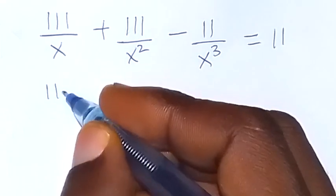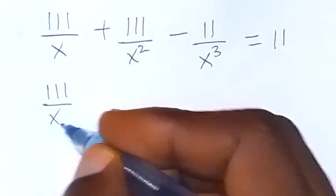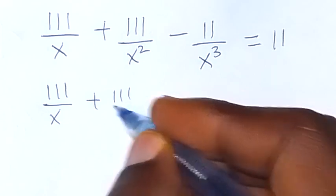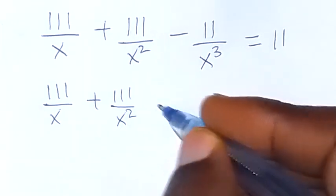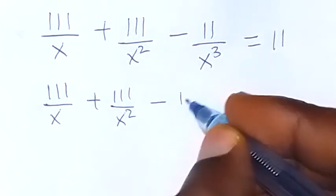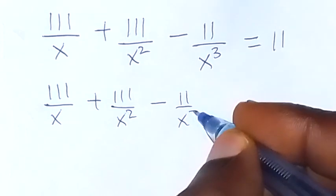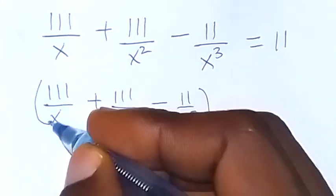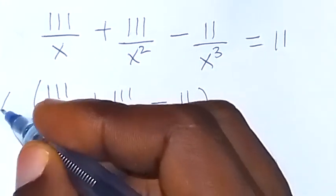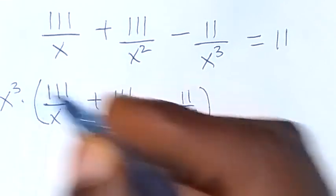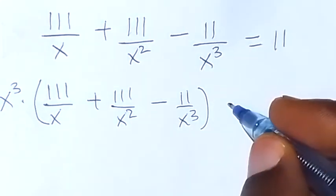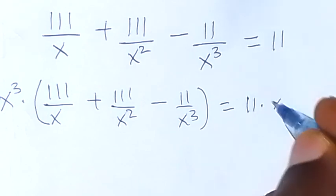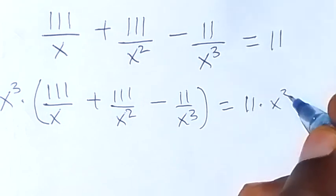We have 1 over x, plus 1 over x squared, minus 1 over x raised to power 3. We multiply this side by x raised to power 3, which is the LCM, and that equals 11 multiplied by x raised to power 3.